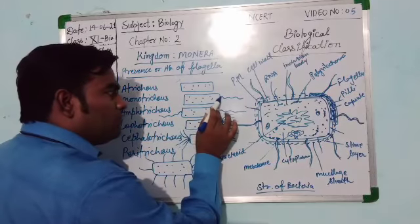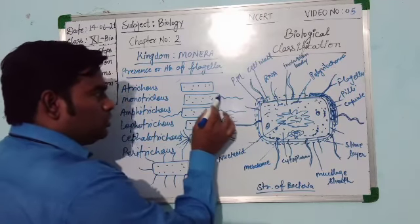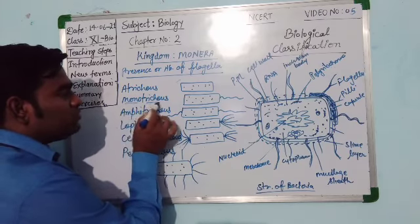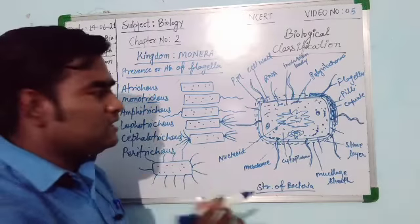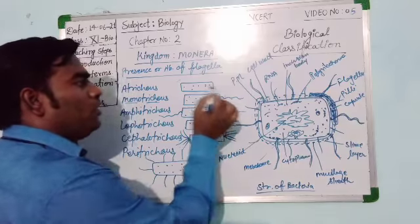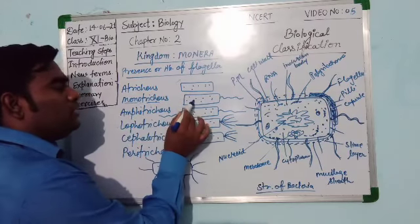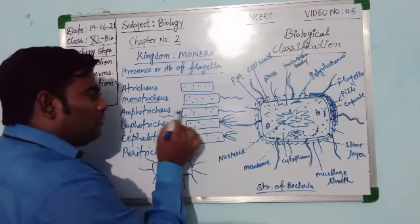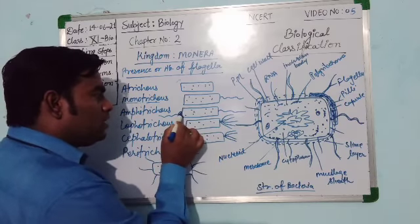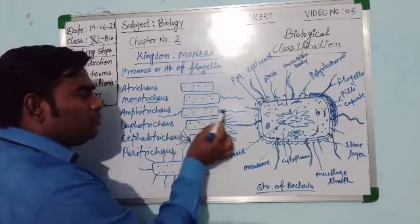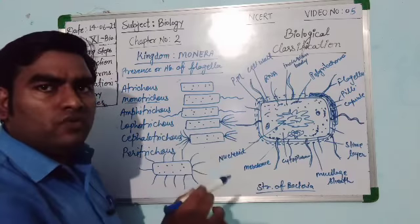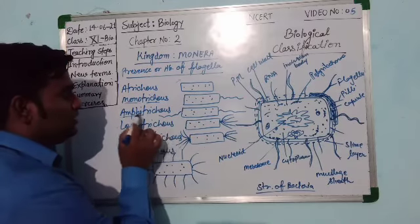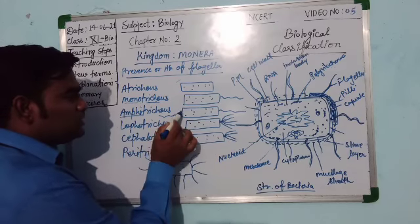If the bacteria has only one flagella at one pole, such a bacteria is known as Monotrichous bacteria. 'Mono' means single, 'trichous' means flagella — so a single flagella at one end. If a bacteria has two flagella, one on each end — one on this end and one on this end — such a bacteria is known as Amphitrichous.